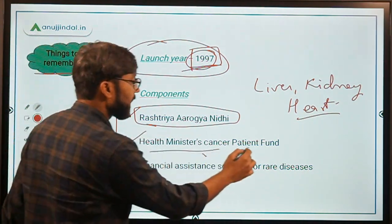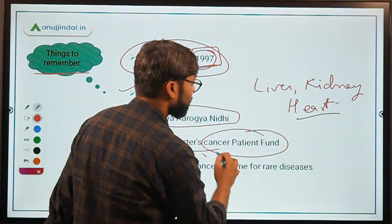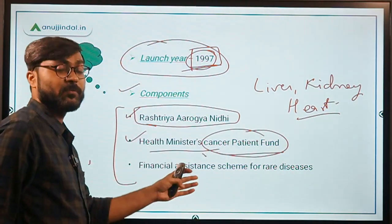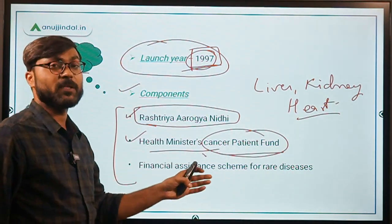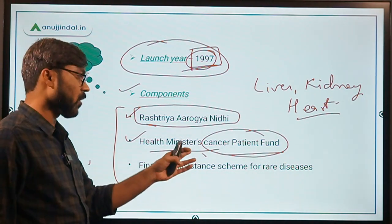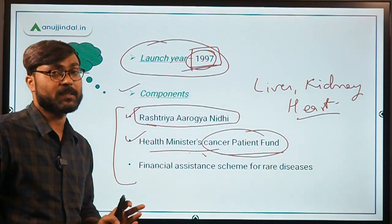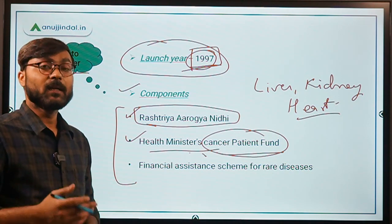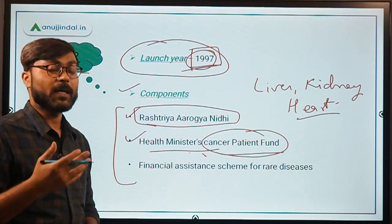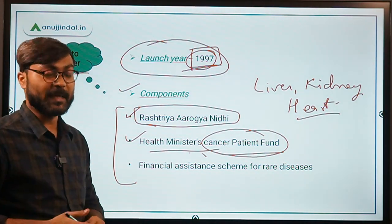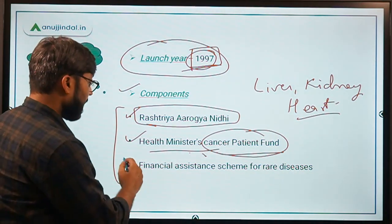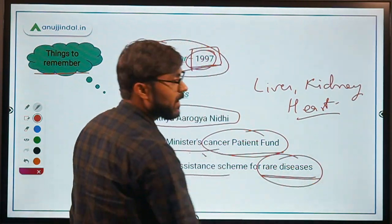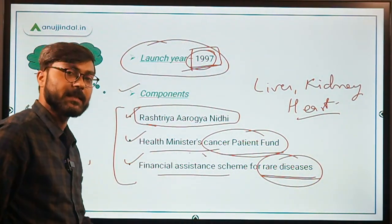The second component is the Health Minister's Cancer Patient Fund. As the name suggests, this component provides financial assistance to BPL families if any member is suffering from cancer. The third component is the Financial Assistance Scheme for Rare Diseases, which covers rare diseases as defined in the scheme's documentation.